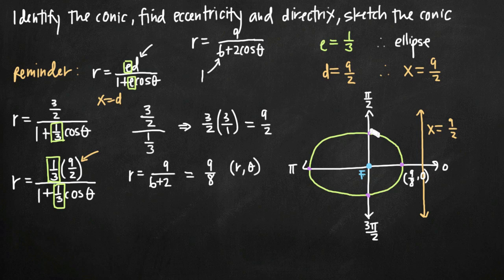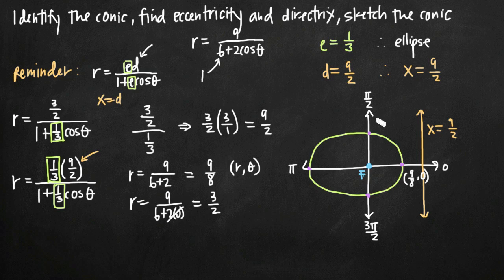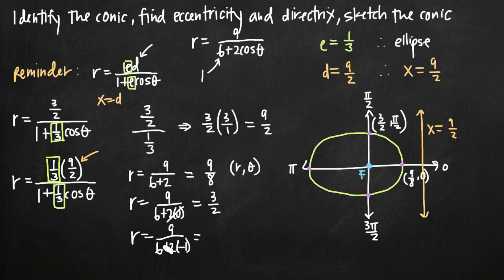At theta equals π: cos(π) equals −1, so the denominator becomes 6 plus 2(−1) equals 4, giving r equals 9/4. The polar coordinate point is (9/4, π). This point is on the left side of the ellipse, farther from the origin than the point at theta equals 0.